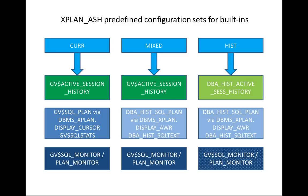Sometimes the execution plan details are already aged out of the library cache and cannot be shown via DBMS_XPLAN.DISPLAY_CURSOR. But if the plan is already in the AWR, you can use the mixed configuration instead, which still picks ASH from V$ACTIVE_SESSION_HISTORY, but uses DBA_HIST_SQL_PLAN and DBMS_XPLAN.DISPLAY_AWR for execution plan details, and DBA_HIST_SQL_TEXT for SQL text. It will still use V$SQL_MONITOR and V$SQL_PLAN_MONITOR for real-time SQL monitoring.